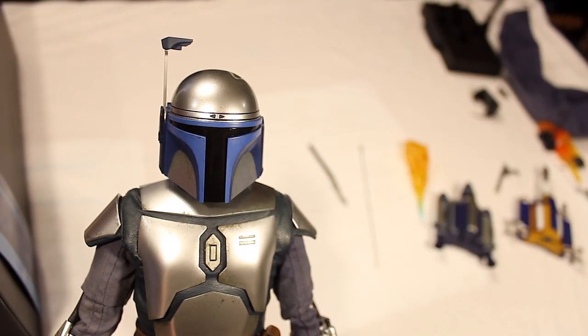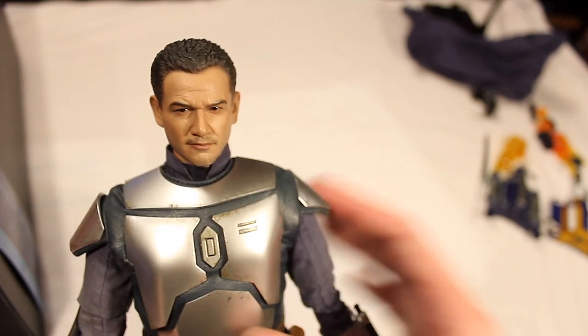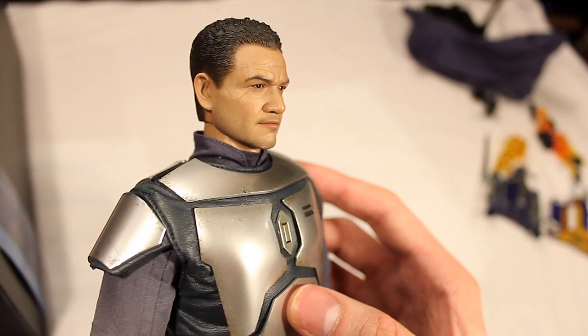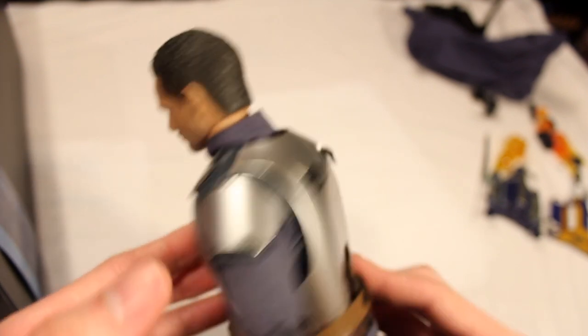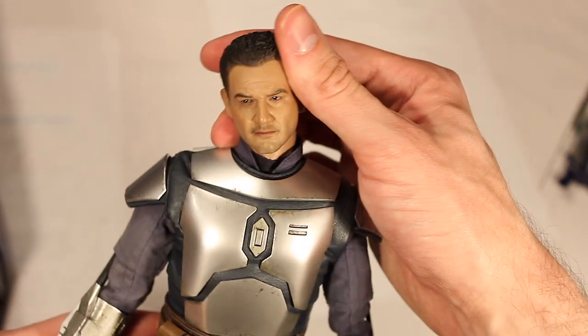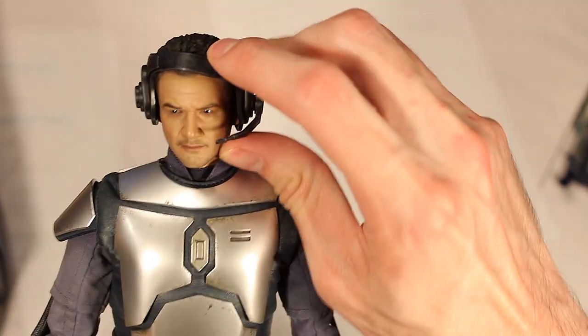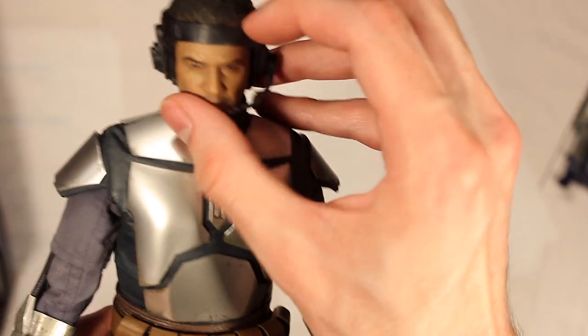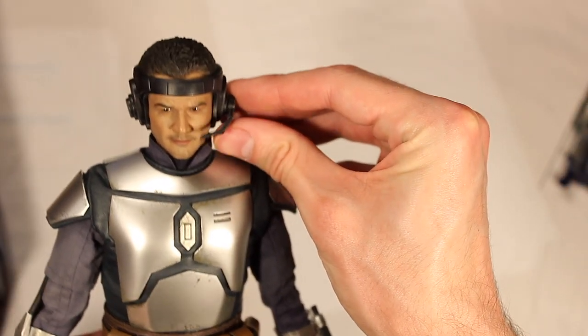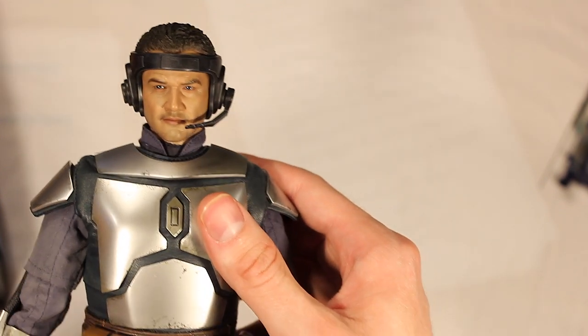Let's see what the head sculpt looks like unmasked. And here you have Jango Fett with the unmasked head sculpt. Again, the lighting really does make a difference in how good this head sculpt looks. So what you do is you take the headset and it's a very flexible headset. And you just push the headset over like this. And there you have it. That's pretty good.